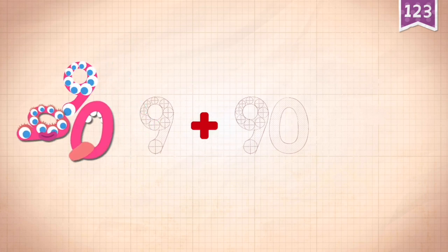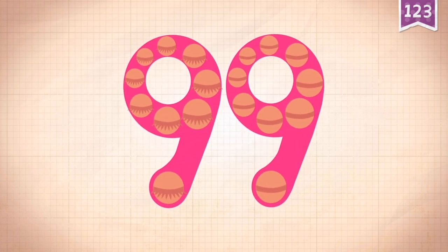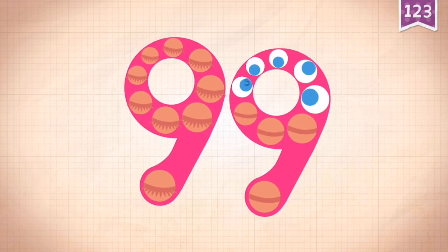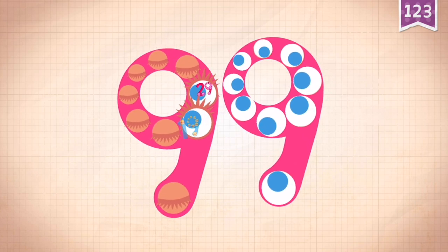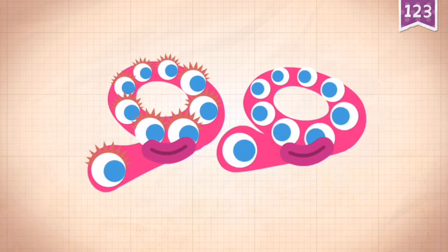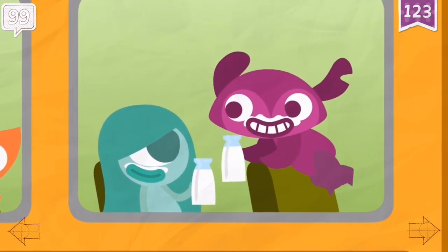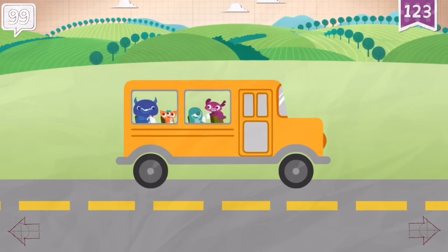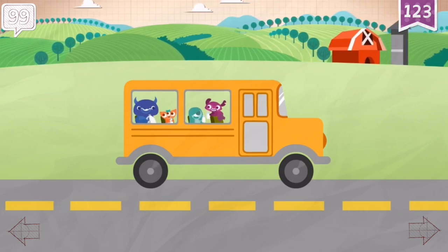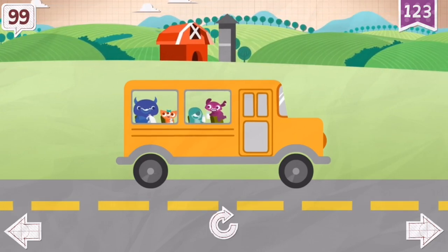99 plus. 90 plus 9 equals 99. Touch 3, 4, 5, 6, 7, 8, 9, 19, 29, 39, 49, 59, 69, 79, 89, 99! There were 99 bottles of milk on the wall.